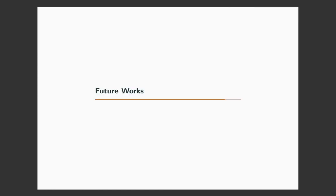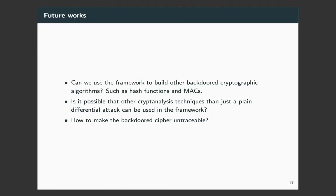For the future works, since we only use the framework to build block ciphers, can we build other backdoor cryptography algorithms such as hash functions and MACs? For the usage of the backdoors, we only apply it to plain differential attack. Is there any other cryptanalysis techniques that works more efficiently? Lastly, since our backdoor is traceable, so how to make it untraceable so that it can be used correctly.